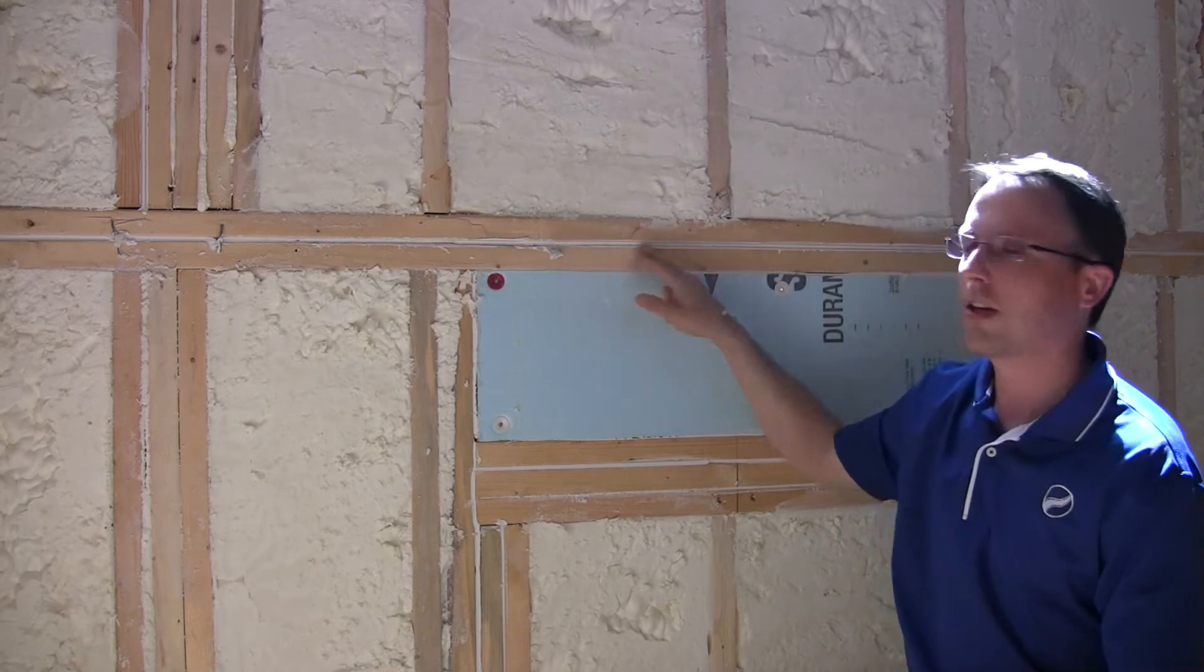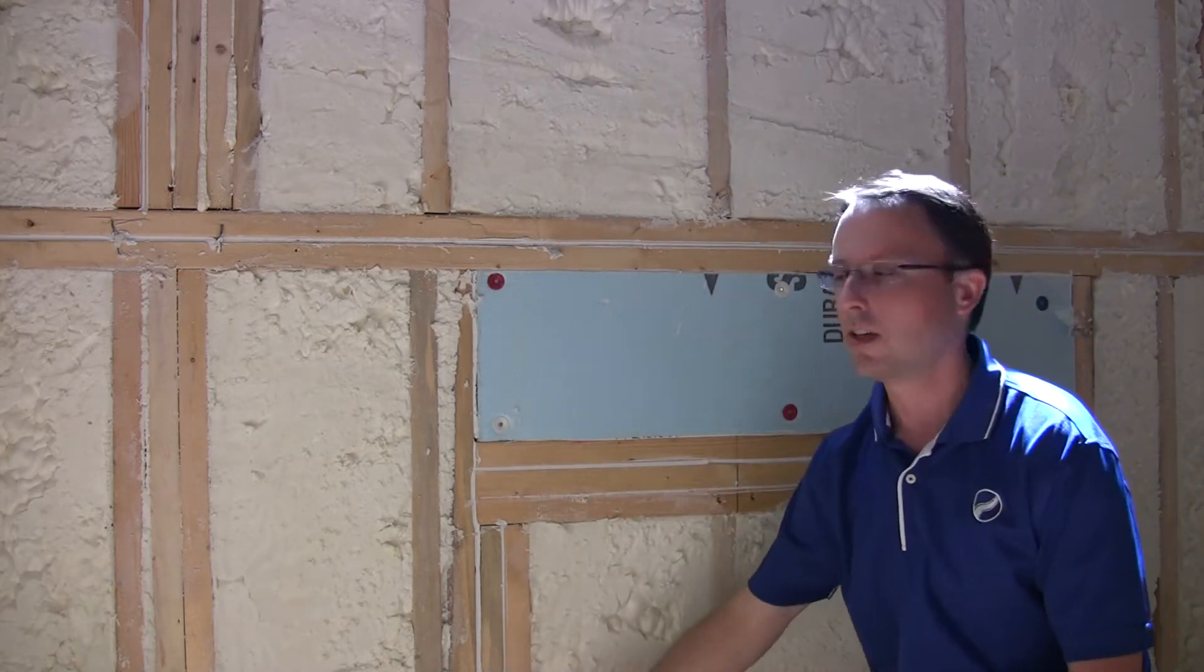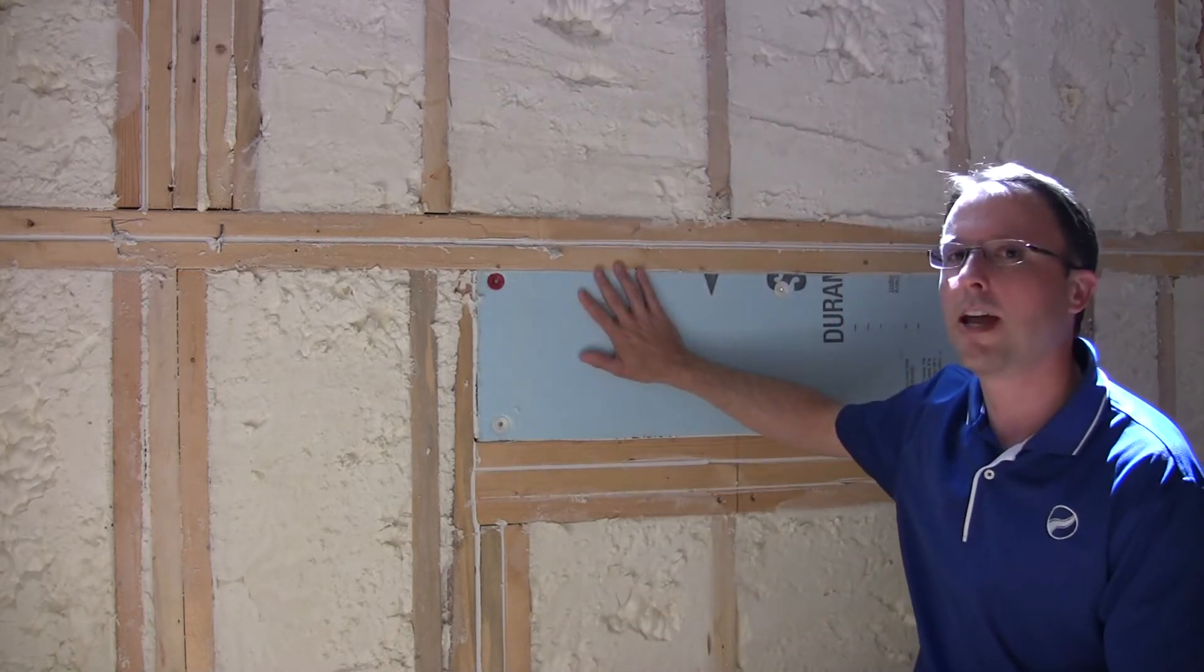We caulk our plate joints. We caulk our studs. This is a 2x10 header. This is a window header.